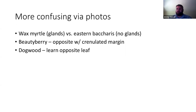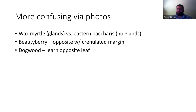Beautyberry is throwing people off more than expected via photos. If you have the fuchsia-colored fruits it's easy, but without those, remember you have an opposite leaf with a wavy crenate margin — wavy tooth margin with rounded teeth. You'll also have the peduncles that held the fruits, which look like elk antlers.